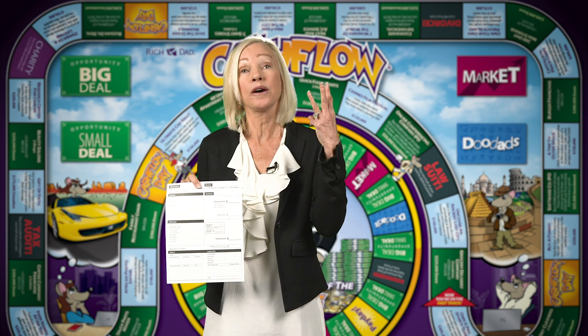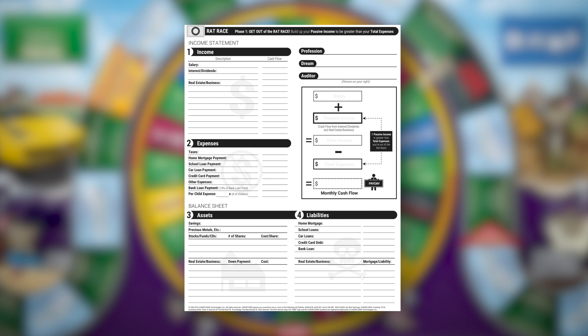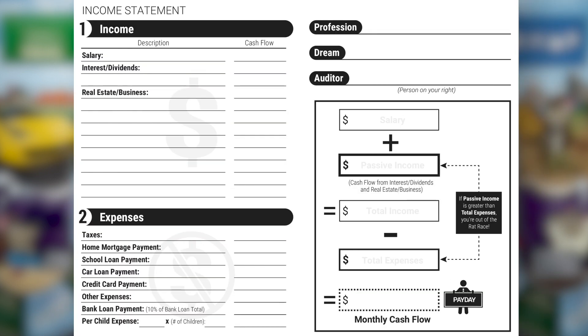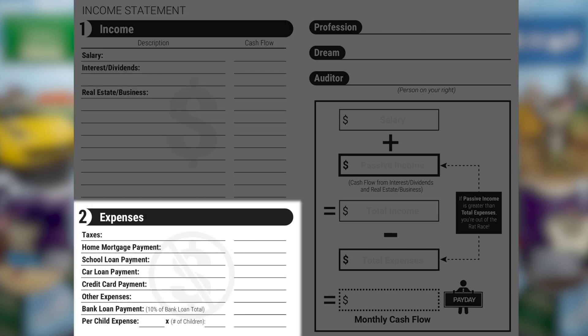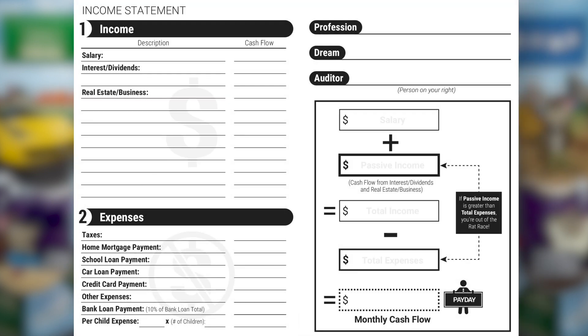What's so important about this financial statement is that in the world of money, investing, and business, there are three main financial statements. The first one is an income statement, also known as a P&L. An income statement records a period of time — money coming in and money going out. It's often done on a monthly basis, so you have your monthly income and all the expenses that flow out.